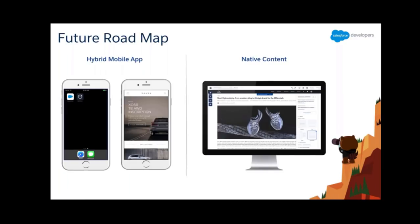Salesforce delivers innovative releases every year and Community Cloud is no exception. The future roadmap includes two key features. First, Hybrid Mobile App — since everyone loves mobile, Salesforce is giving you the option to create and export a mobile app from your own community and publish it to the Play Store and App Store. Second, Native Content — where today CMS Connect imports references from third-party servers, with Native Content you'll be able to create and manage content right from within Salesforce Community. That's what's in store for Community Cloud.